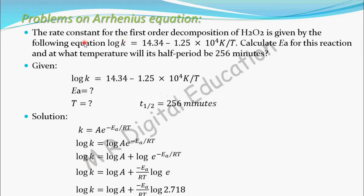Now for the second part of the question: at what temperature will the half-life period be 256 minutes? Since this is a first order reaction, we know that K = 0.693 / t½. Once we calculate K from this relation, we can substitute into the given equation where temperature is the only unknown, and solve for T.